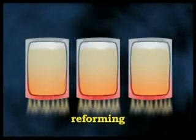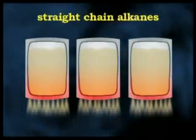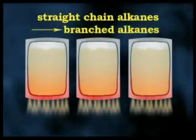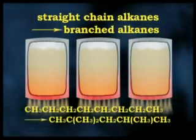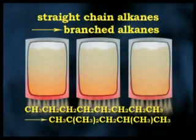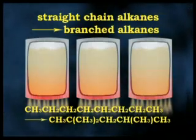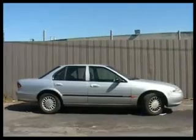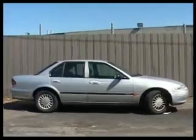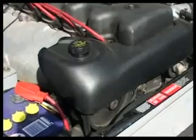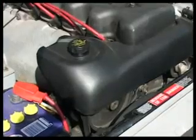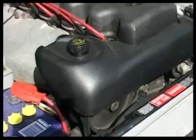Reforming involves the breaking of straight chain alkanes into branched alkanes. The branched chain alkanes in the 6 to 10 carbon atom range are preferred as car fuel. These alkanes vaporise easily in the engine's combustion chamber without forming droplets and are less prone to premature ignition which affects the engine's operation.